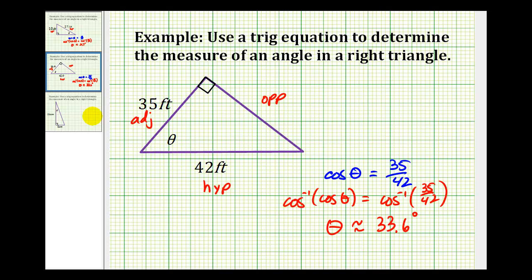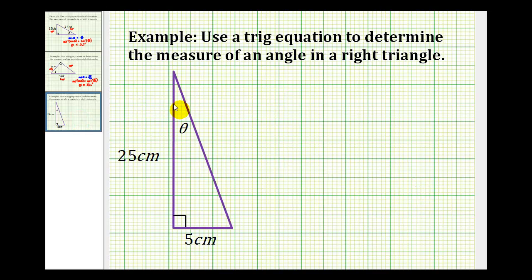Let's go ahead and take a look at one more example. If this is theta, then the side of length five centimeters would be the opposite side. The side opposite the right angle is the hypotenuse, and this would be the adjacent side.